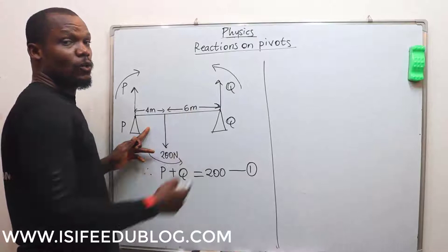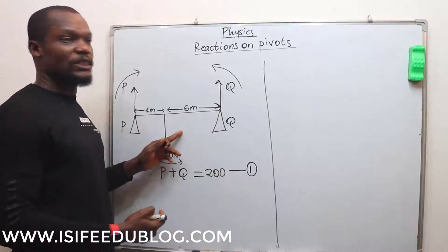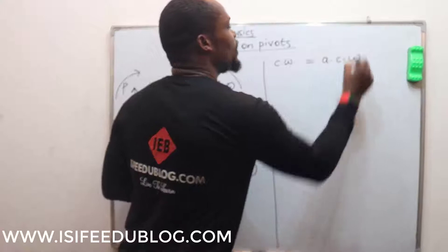If we say that clockwise moment equals anticlockwise moment, what is the clockwise moment? The moment of P, which is P multiplied by this distance.